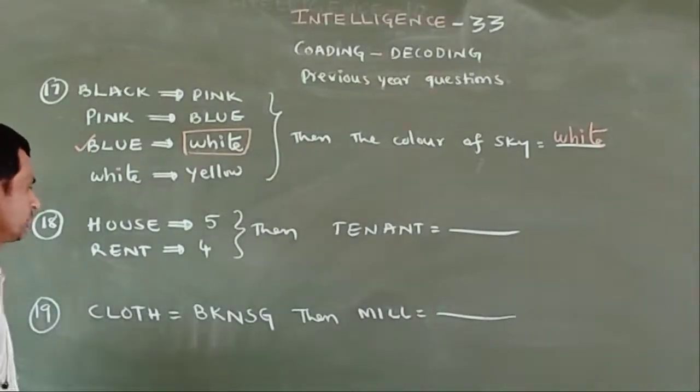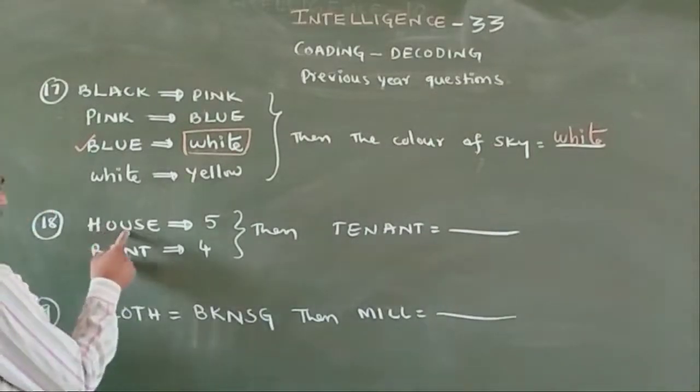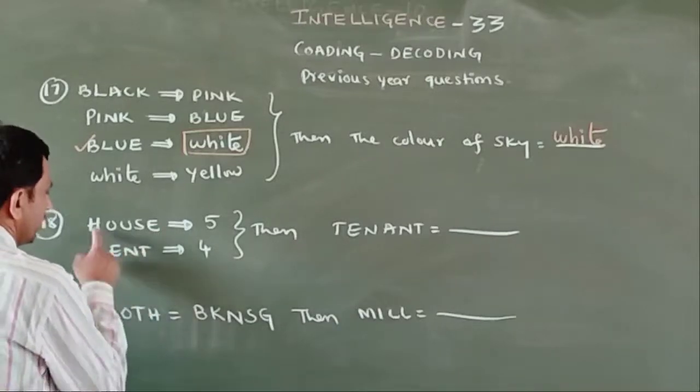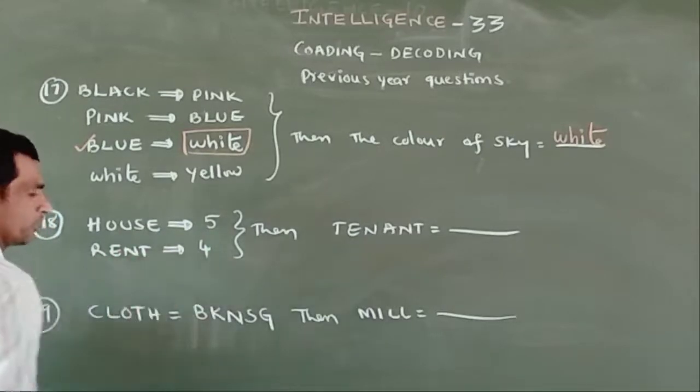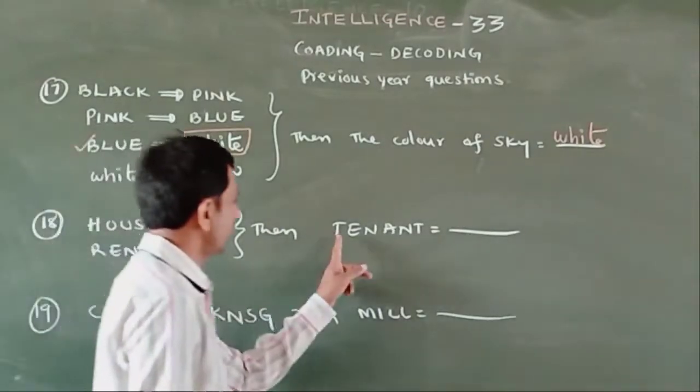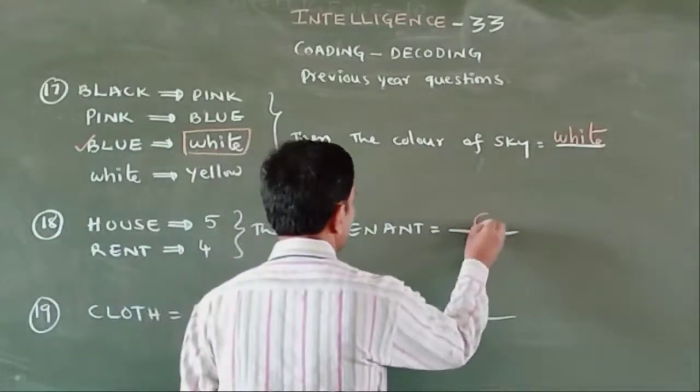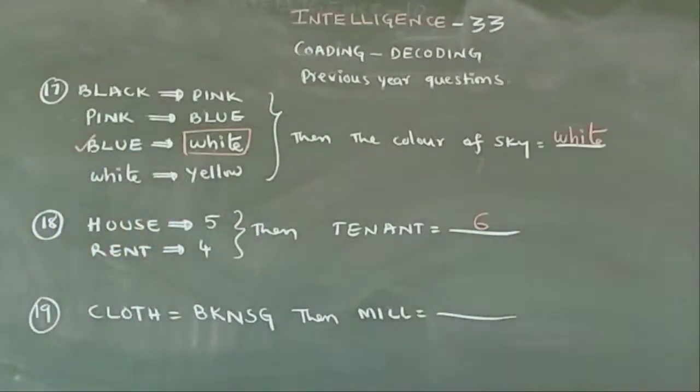HOUSE equals 5, RENT equals 4, then TENANT equals what? HOUSE is 1, 2, 3, 4, 5 letter word. RENT is 1, 2, 3, 4 letter word. TENANT is 1, 2, 3, 4, 5, 6 letter word. Answer is 6.